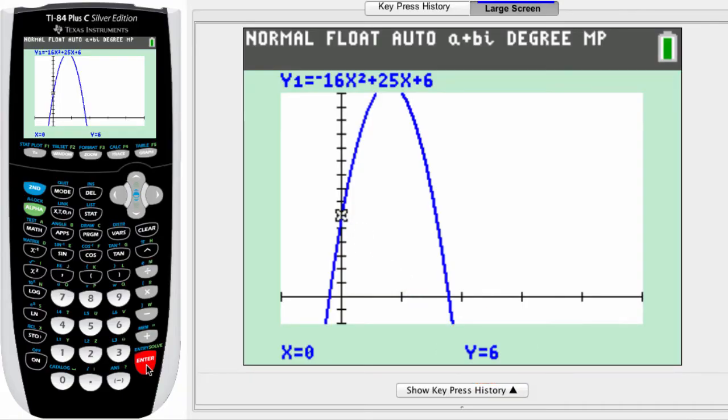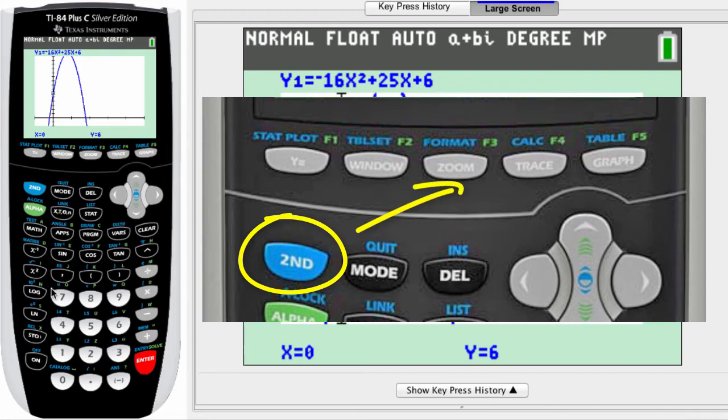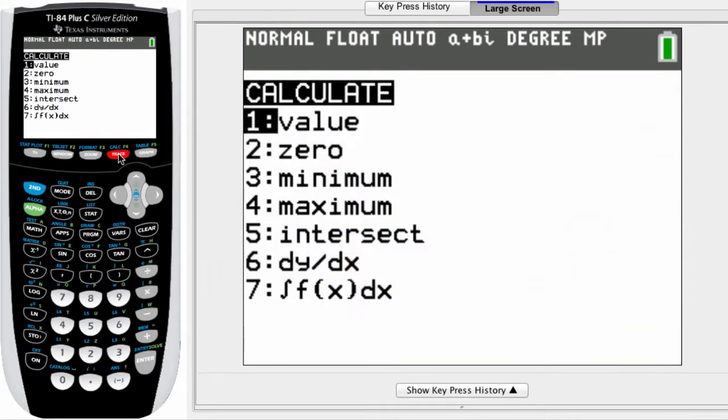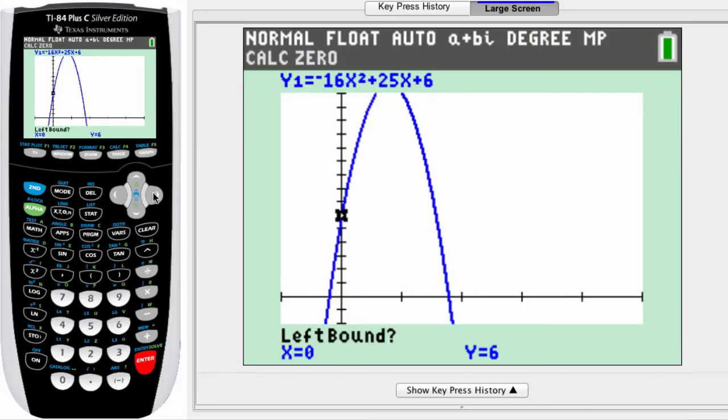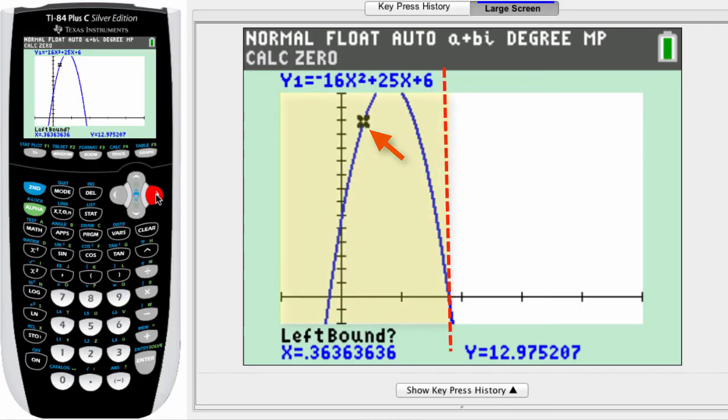Okay, let's find the x-intercept. Begin by pressing the second and trace keys. And this time we're gonna go with number 2. Choose 0. Now for this one, we need to define a left bound and a right bound because the calculator needs to know where to look. So position this little x here that blinks anywhere to the left of where it crosses the x-axis.